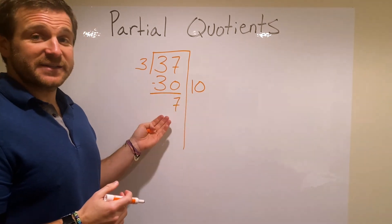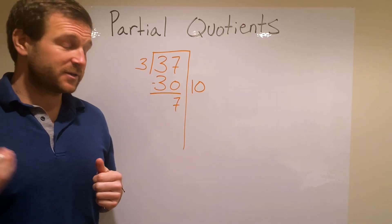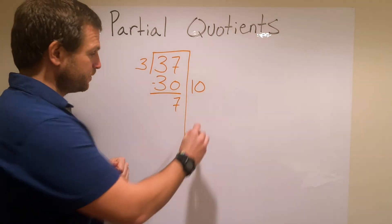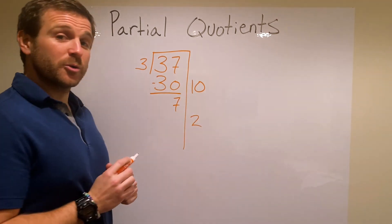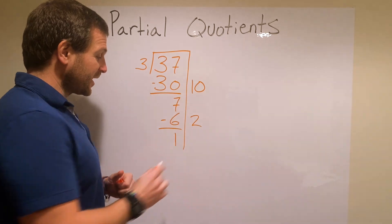And now the only thing left is 7. So how many groups of 3 can I remove from 7? It's 2 groups. So I can do 2 groups here, and that's going to give me 6. Subtract that out and I get 1.